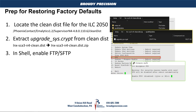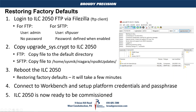The next step is to enable FTP or SFTP, depending on the level of software versioning in the ILC 2050. On the unit being demonstrated here, the option is FTP, so you would enable FTP to be able to use FileZilla to copy the .crypt file into the controller. When logging into FileZilla with FTP enabled, use the username 'admin' with no password. If you've enabled SFTP, the username is 'sftp user' and the password is what you defined when you enabled SFTP.